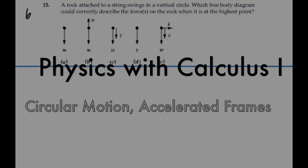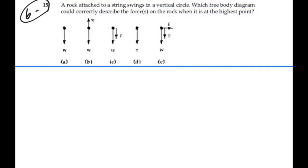Here's problem 6.15. A rock attached to a string swings in a vertical circle. Which free-body diagram could correctly describe the forces on the rock when it's at its highest point?